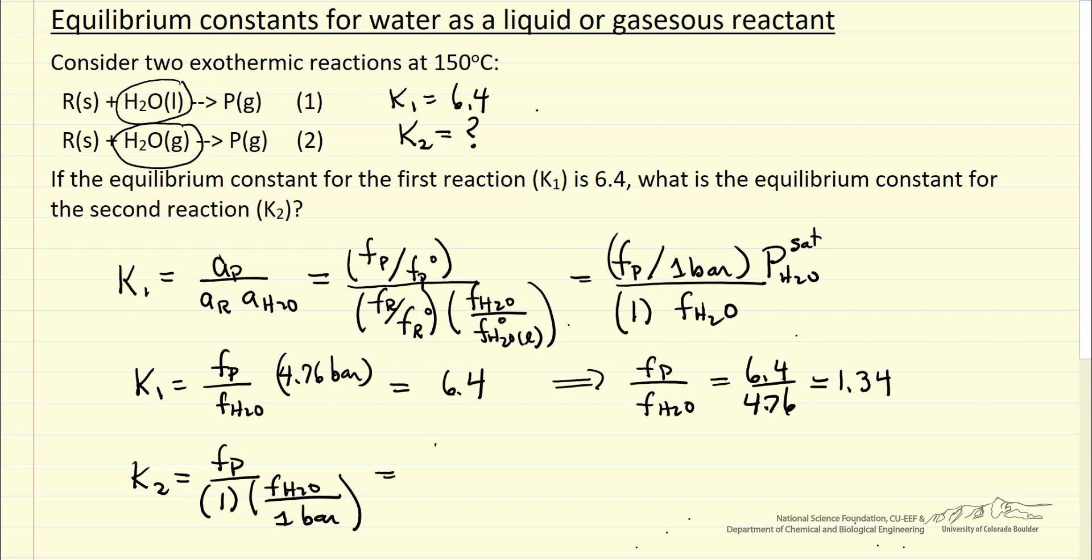So K2 is equal to fugacity of P over fugacity of water, which we calculated as 1.34. So that means K2 is indeed different from K1, is equal to 1.34.